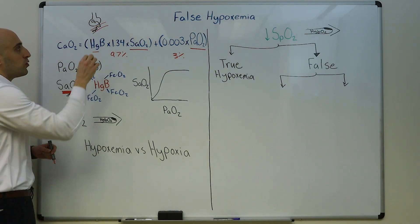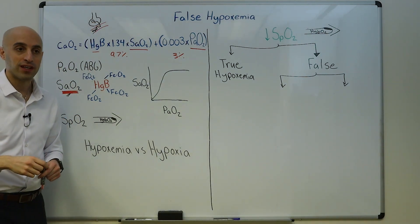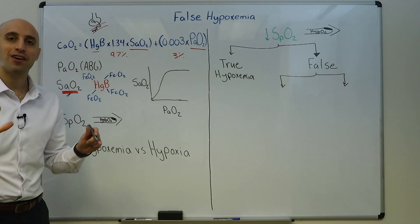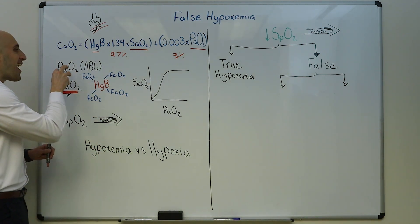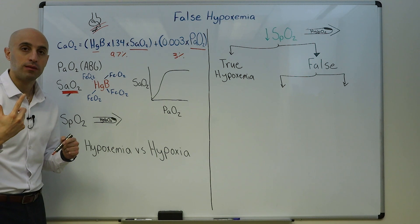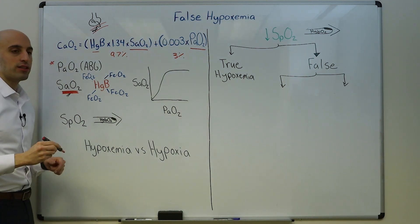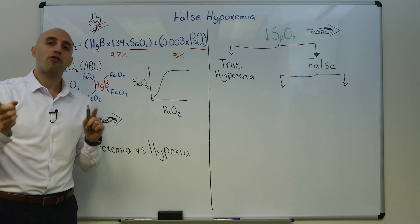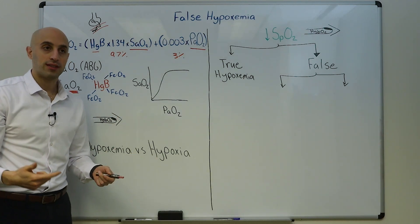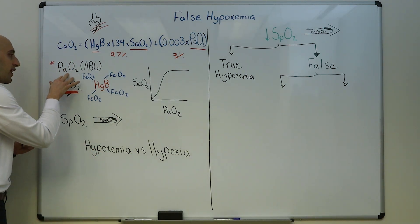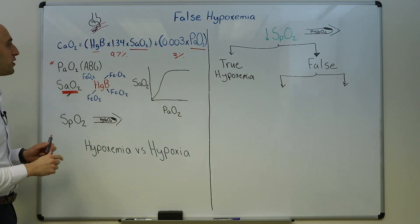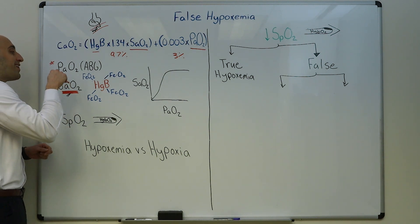So now let's define each of these variables and discuss what affects them. Let's start with the PaO2, the partial pressure of oxygen. We have this graphic right here which shows that the PaO2, meaning what gets dissolved in the blood, only depends on the oxygen at the level of the alveoli and the ability of the oxygen to diffuse into the blood vessel and the lack of any shunts.